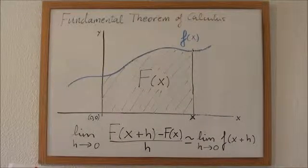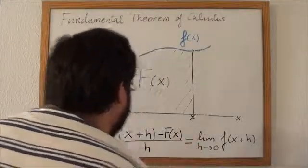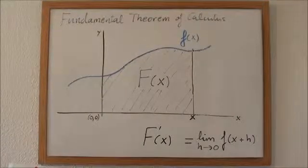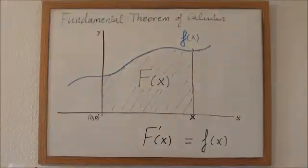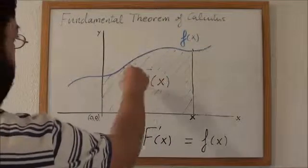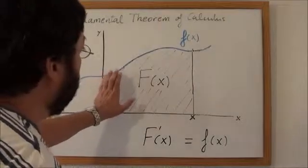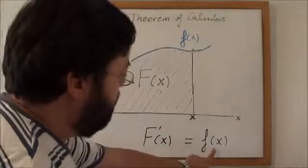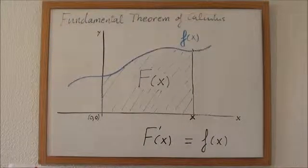When h goes to zero, the approximate sign becomes an equal sign, and this expression becomes the derivative of uppercase F of x. So we have that the derivative of uppercase F — defined as the area included in this region — is the function lowercase f of x. That's the fundamental theorem of calculus.